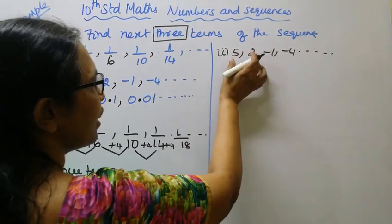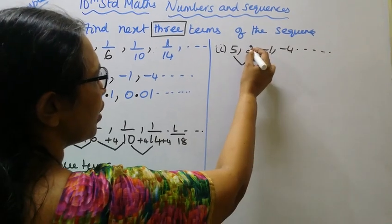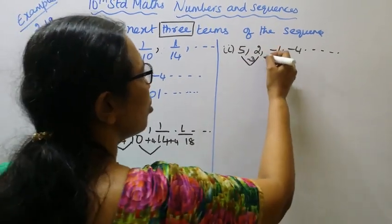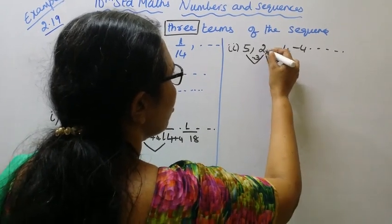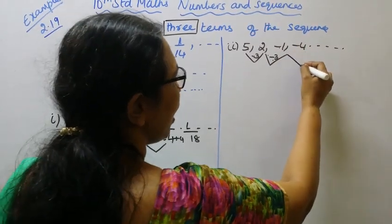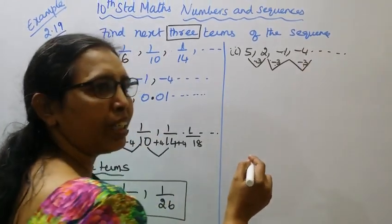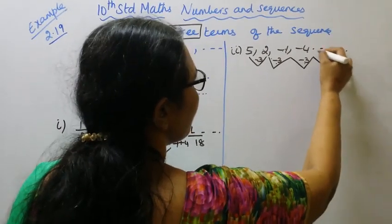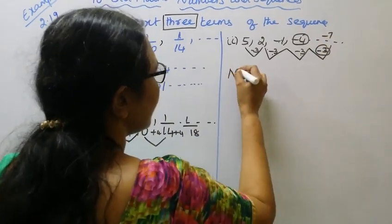The sequence is 5, 2. The common difference is minus 3. So: 5 minus 3 is 2, 2 minus 3 is minus 1, minus 1 minus 3 is minus 4. Then minus 4 minus 3 is minus 7. The next 3 terms start from minus 7.